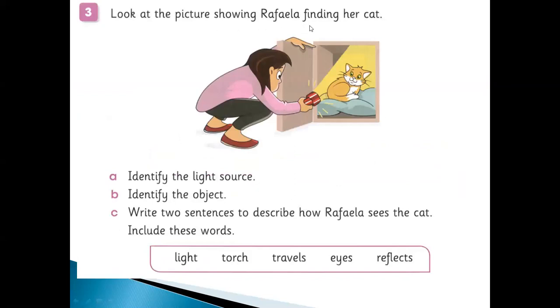Question number three: look at the picture showing Rafila finding her cat. Identify the light source - you can see the torch right here. Identify the object - the cat. Write two sentences to describe how Rafila sees the cat. Include these words.